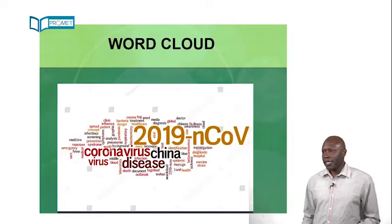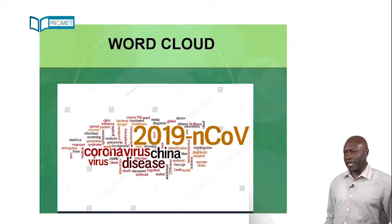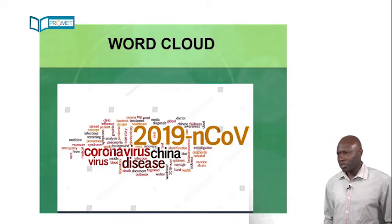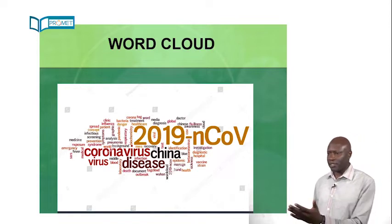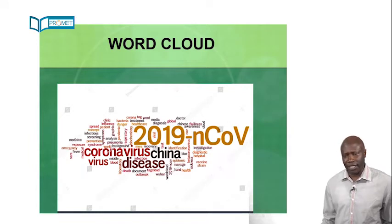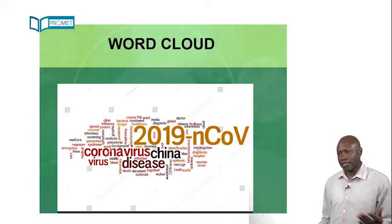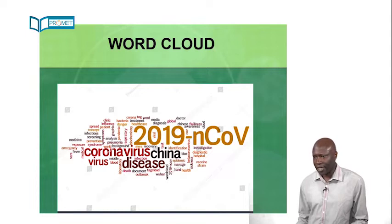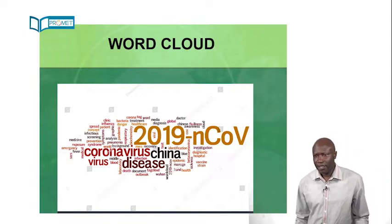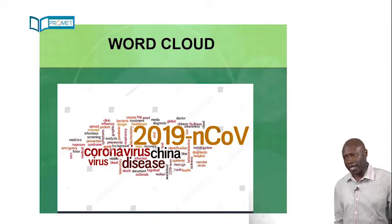Now let's have a look at the word cloud and focus on the words around. So here you can see 2019 COVID virus. A virus. What is it? Yes. It's a small agent causing infectious diseases. Right. You have the word outbreak. What does it mean? It is a sudden rise of a disease somewhere in the world.